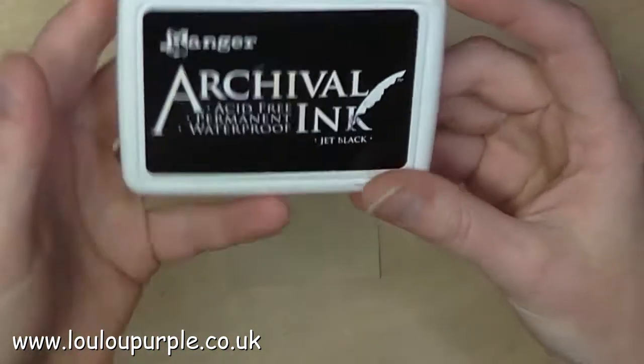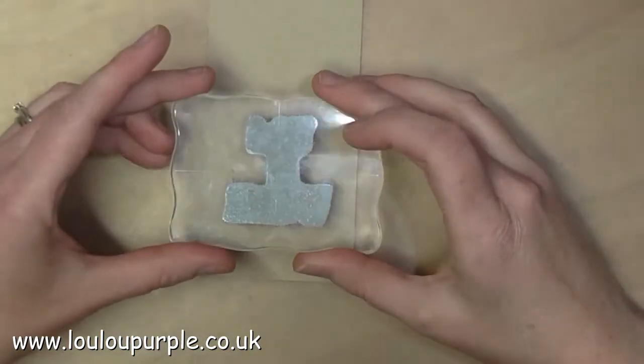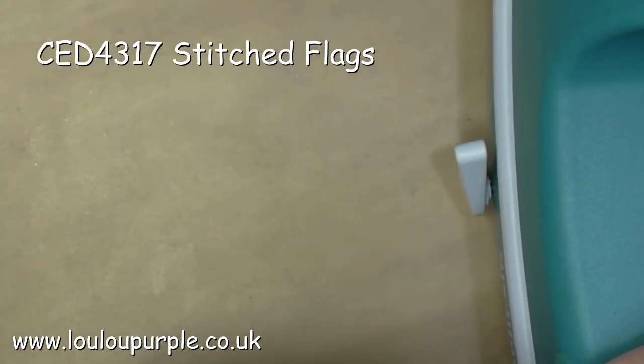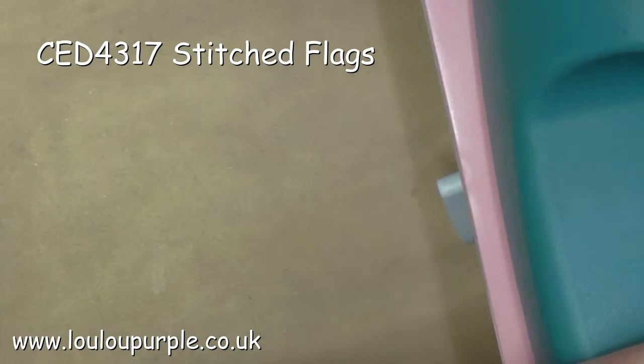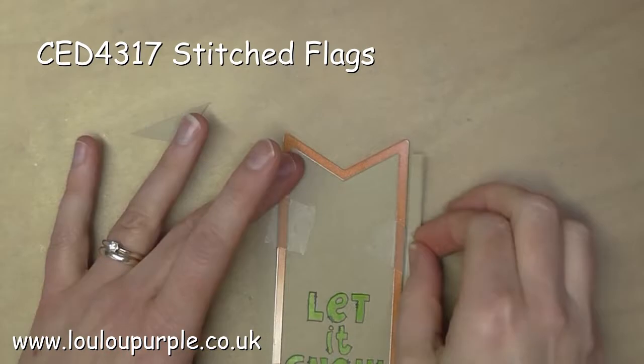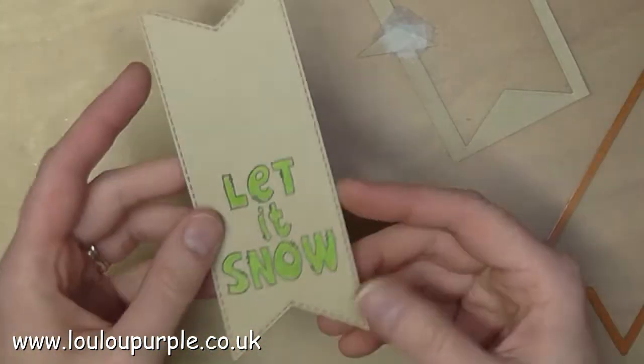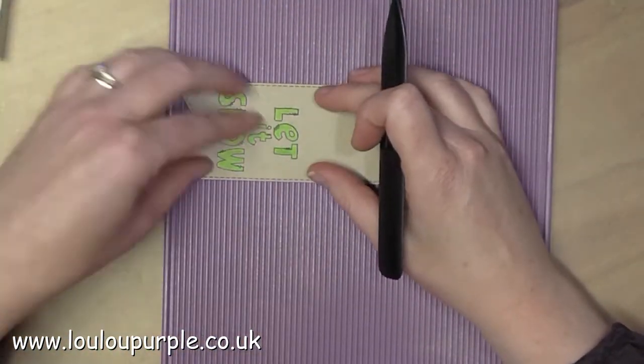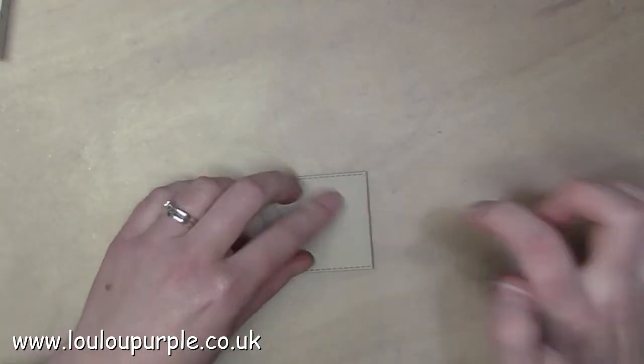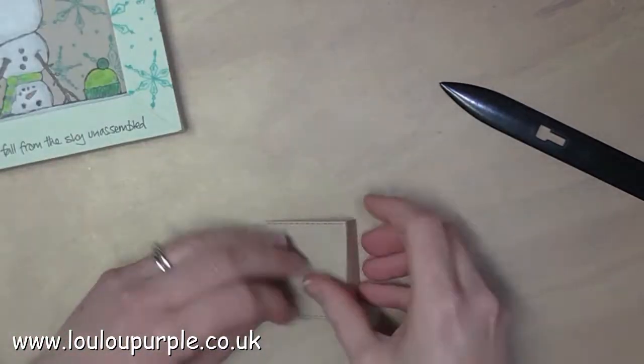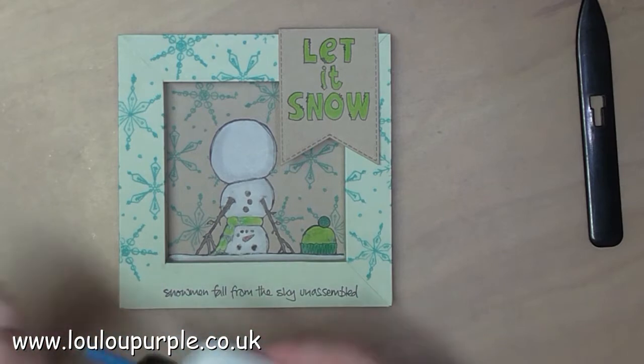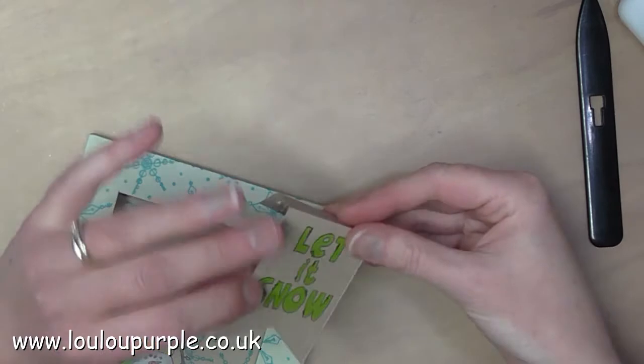I am now using my black archival ink pad to stamp the let it snow words onto the same craft card. I am going to use my Coloursoft pencils to colour it in, and I am using the Sue Wilson Stitched Flags CED 4317 die to cut out the flag shape. I am now using my scoreboard just to make a neat fold so that I can fold the flag around the outside edge of my shadow box. I am now using my Cosmic Shimmer acrylic glue to stick this flag onto my shadow box.